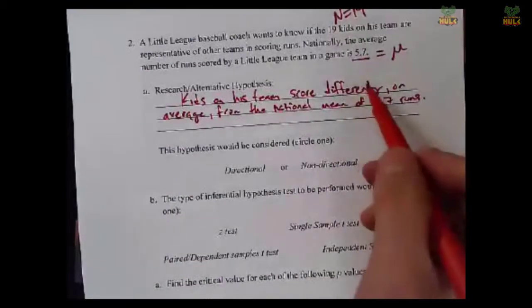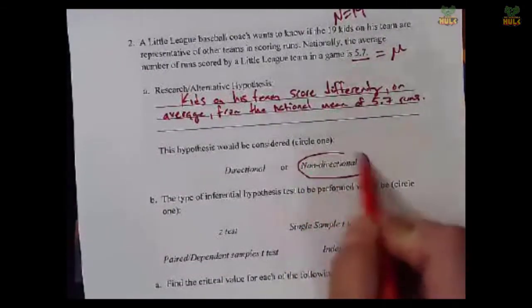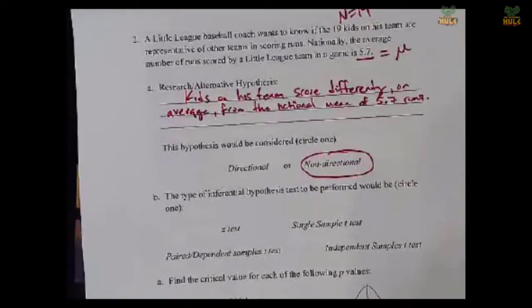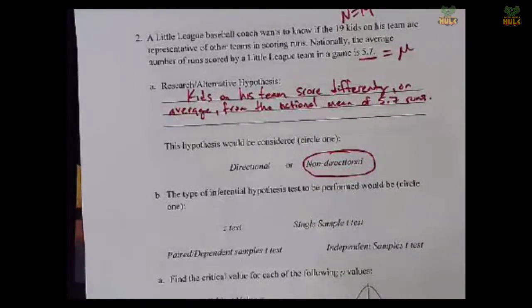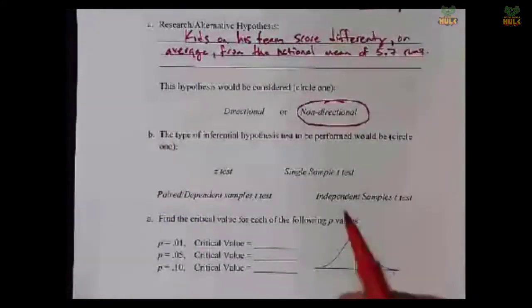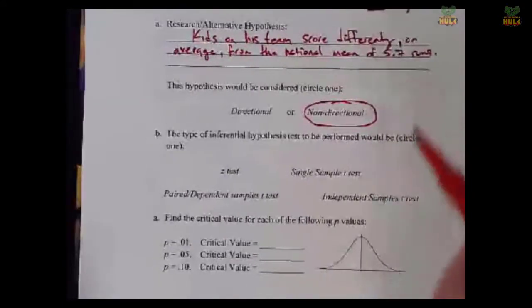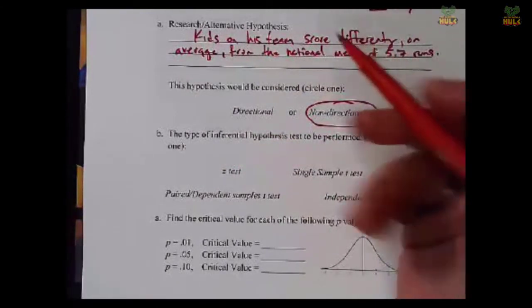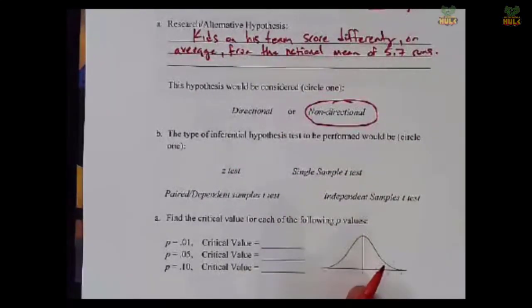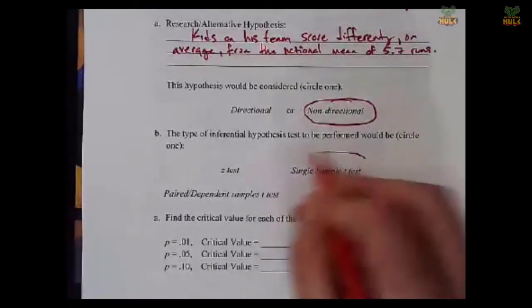We know that the national average is 5.7. We know 19 kids, so we know that information. He's asking whether or not the kids on his team are representative of, whether they're different or the same. So let's say then that his hypothesis is that the kids on his team score differently on average from the national mean of 5.7 runs. Differently means non-directional. Could be in either direction, which means we're going to have a two-tailed test.